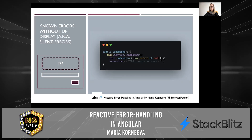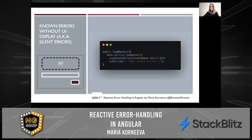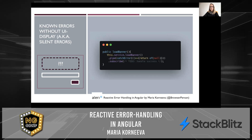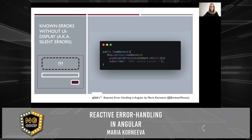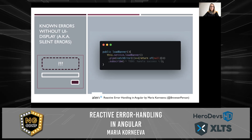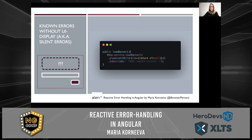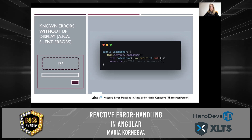The next type of error: silent errors. Let's say you want to load some banner and it fails. The user doesn't know that the banner should be there, so if it fails, an error message would rather confuse them than help. In this case, you just don't show anything in your UI, and you just return null as if the service is up and running and doesn't return anything.